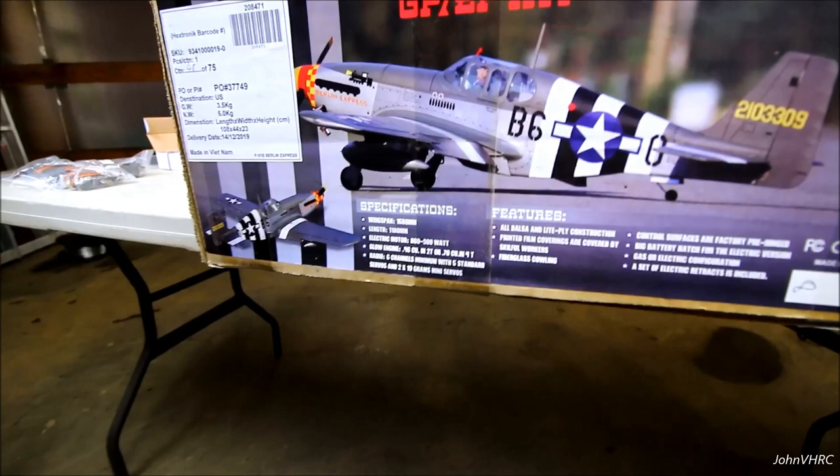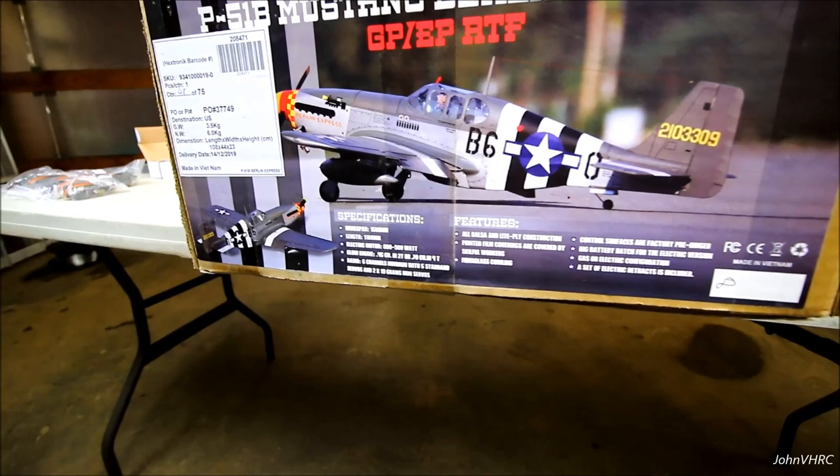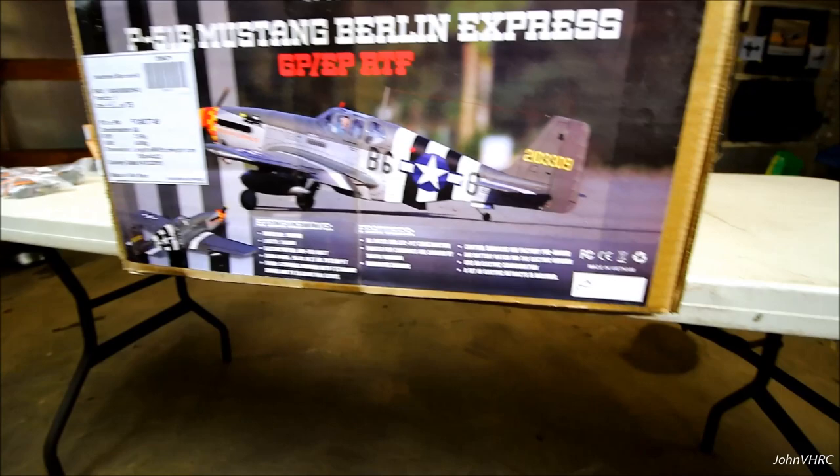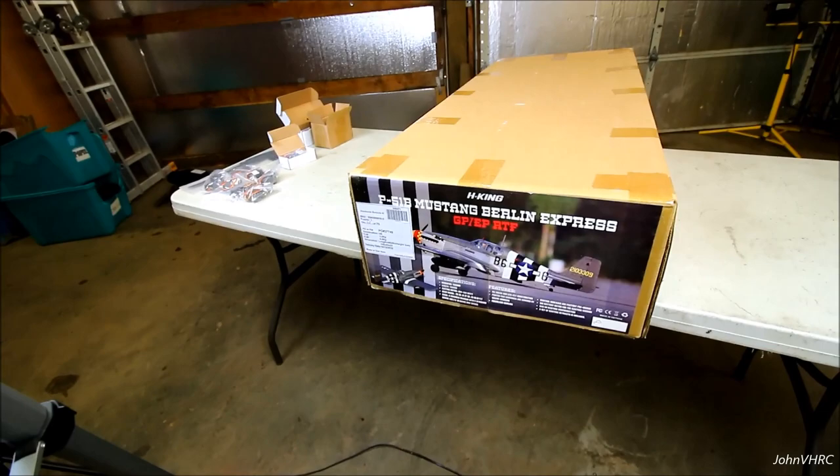Make sure you check it out. Here you can see the specs, wingspan 1580, length, motor, glow engine what it would take, six channel minimum with at least five servos. This is all balsa and light ply construction, fiberglass cowl, everything's pre-hinged. Very cool. Electric retracts should be fun. Everybody loves a P-51, right?